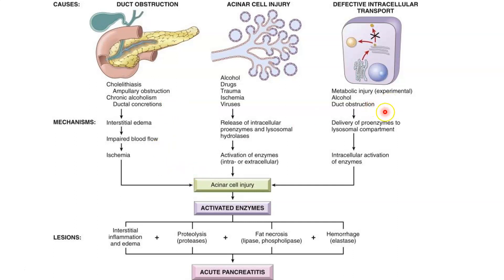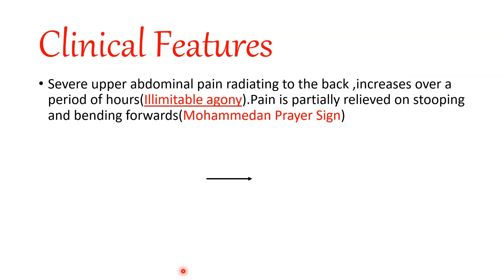Alcohol and duct obstruction cause delivery of proenzymes to the lysosomal compartment, resulting in intracellular activation of enzymes and acinar cell injury. These activated enzymes can result in interstitial inflammation and edema, proteolysis, fat necrosis, and hemorrhage, causing acute pancreatitis. The patient presents with severe upper abdominal pain that radiates to the back, partially relieved on stooping and bending forwards — called the Mohammedan prayer sign.